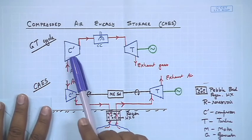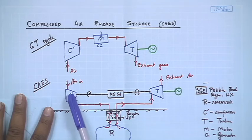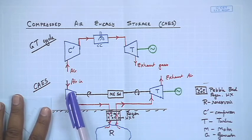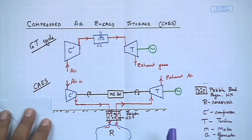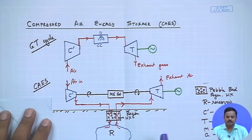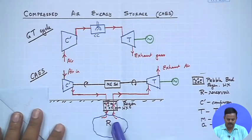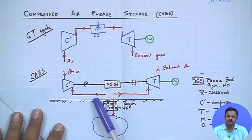Looking at the schematics we had drawn: we have a compressor where air comes in at approximately atmospheric pressure and normal temperature, and then it is compressed. As the air is compressed, its pressure rises, its volume shrinks, and its temperature also rises. That pressurized air is then stored in a reservoir.